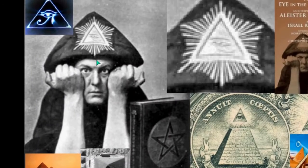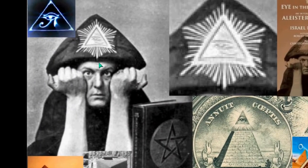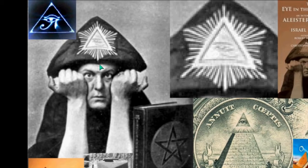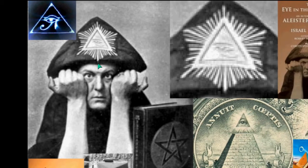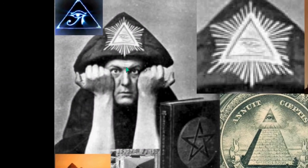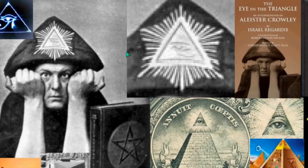We begin with the most famous Satanist on the planet — he's now dead. This is Aleister Crowley, and we see that he has a triangle with an eye in it. This is the Egyptian-style eye, and it has illumination around it. This is the Eye of Horus, and so this is a Satanist wearing the Eye of Horus.